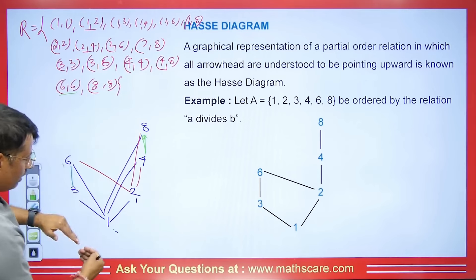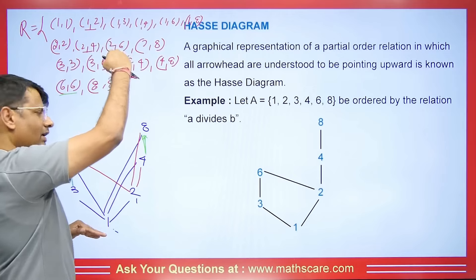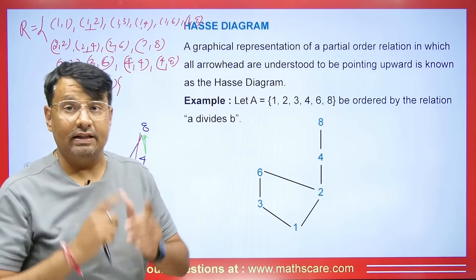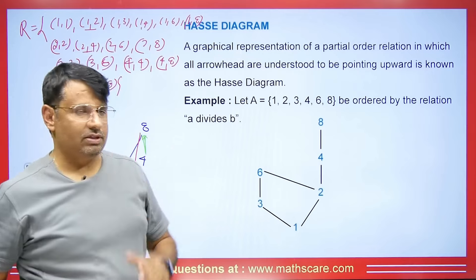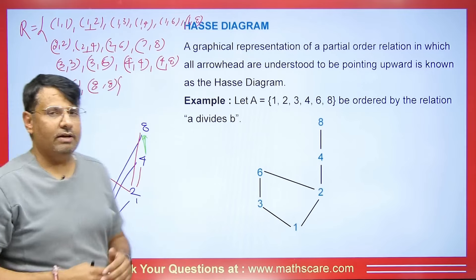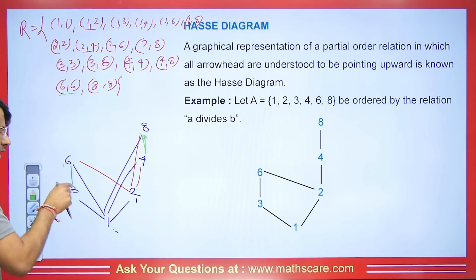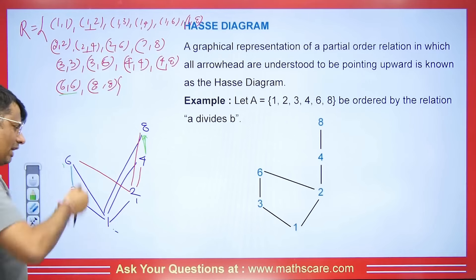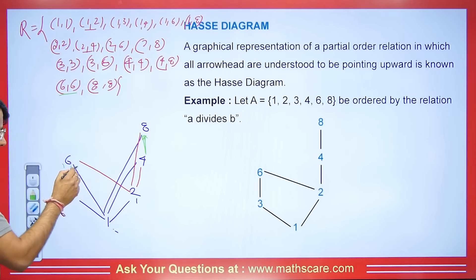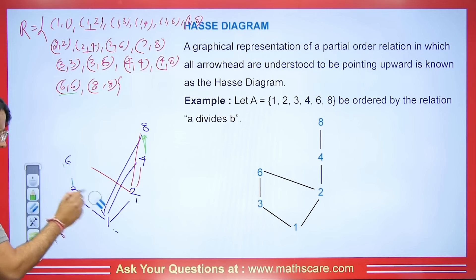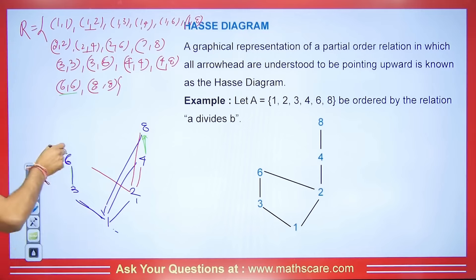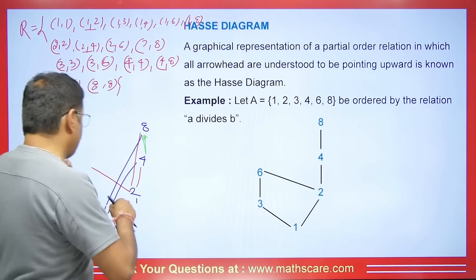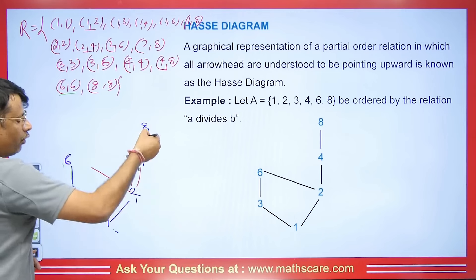The second property is anti-symmetry. Since the graph goes upwards, it's not the case that 1 divides 2 and 2 also divides 1. The relation is defined from bottom to top, not top to bottom. The third property is transitivity: if 1 divides 3 and 3 divides 6, then 1 divides 6. We don't need a direct line for this — it's implied by transitivity. So we don't need the line from 1 to 6 directly, since it's already covered transitively.